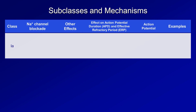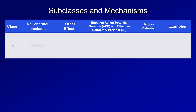Starting with the 1a drugs, they have moderate effect at blocking sodium channels, but they also have moderate effect at blocking potassium channels as well. Because of the potassium channel blocking properties, 1a drugs increase the action potential duration and thus increase the effective refractory period.